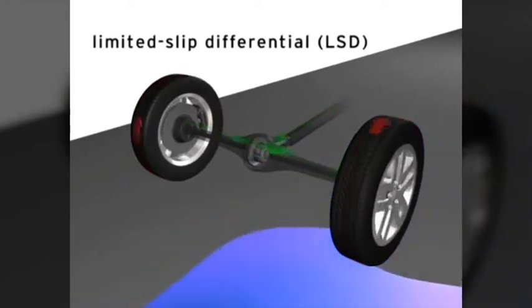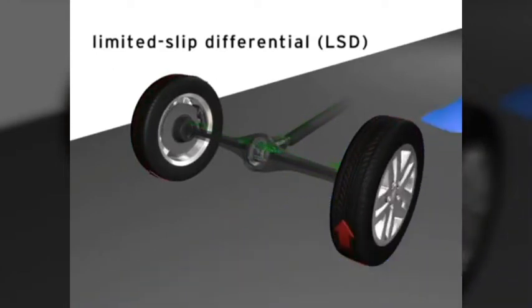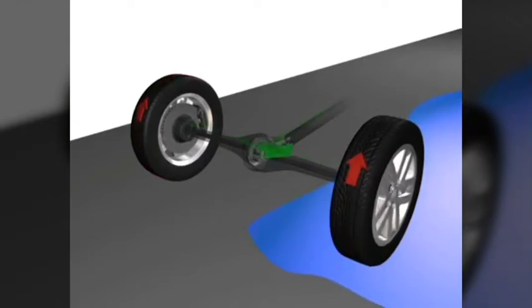The disadvantage of a limited slip differential is the amount of power that can be transmitted to the wheel with traction is also limited.